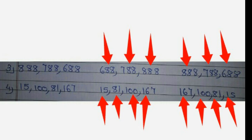Now we will see the fourth example: 15, 100, 81 and 167. Tell me the ascending order. Very good — first 15, then 81, then 100 and 167. Now tell me the descending order: 167, 100, 81 and 15. Very good children. I think your concept of ascending and descending order is now clear.